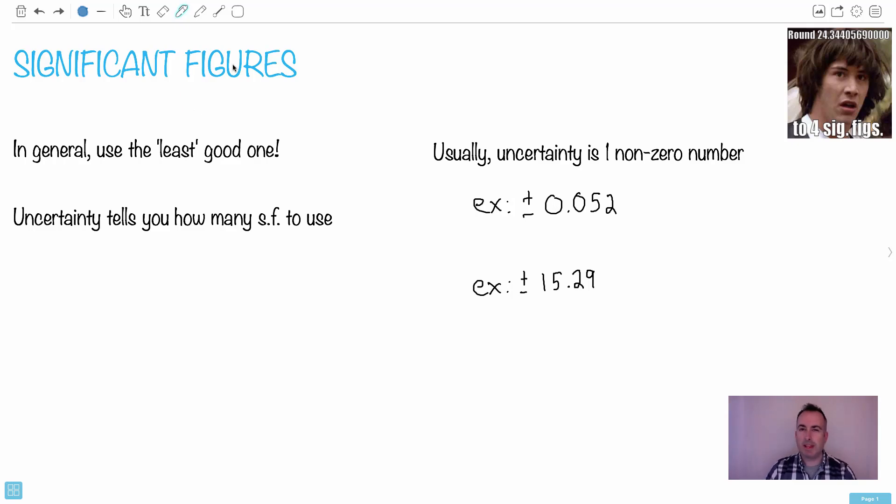So for significant figures, it's related very much to uncertainty. And I love how this drawing, this picture here of Keanu Reeves, you're supposed to round something to four sig figs. What do we mean by this? I think a lot of people spend too much time worrying about how many significant figures to use.